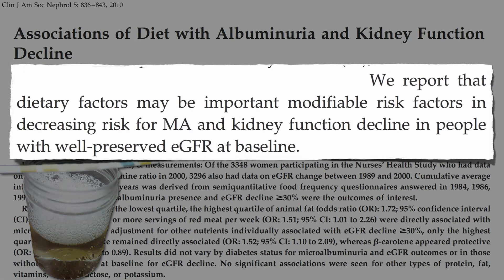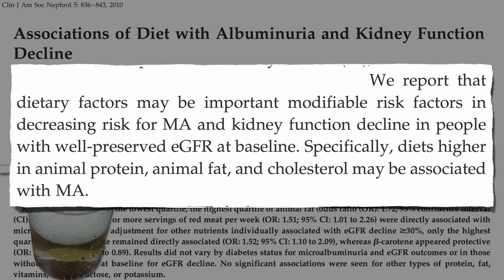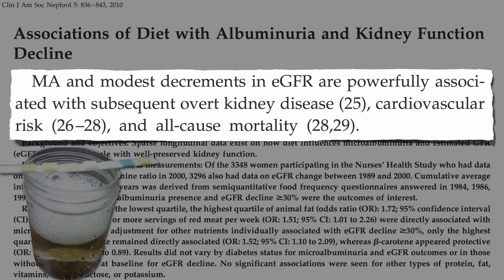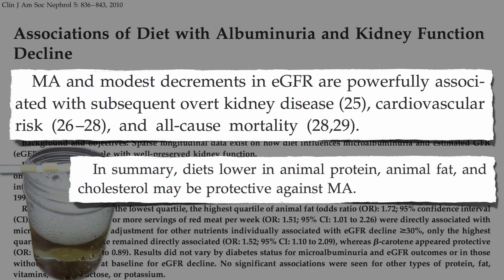There were three significant risk factors for declining kidney function in these women — none surprising given that we're talking about clogged and inflamed blood vessels. Specifically, diets higher in animal protein, animal fat, and cholesterol may be associated with microalbuminuria and failing kidneys. No such association was found for plant protein or plant fat. Microalbuminuria and modest decrements in kidney function are powerfully associated with subsequent overt kidney disease, cardiovascular risk, and all-cause mortality — meaning a shortened lifespan. In summary, diets lower in animal protein, animal fat, and cholesterol may be particularly beneficial for kidney health.